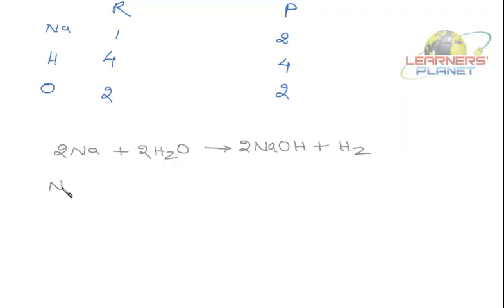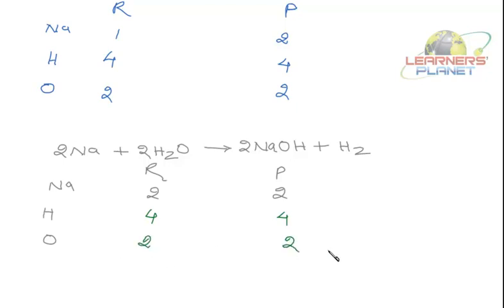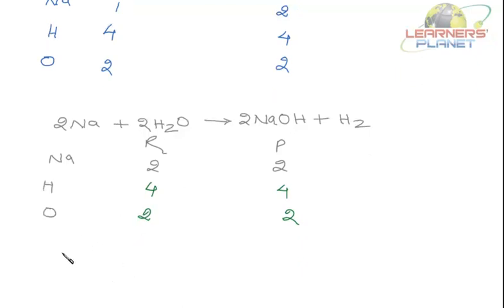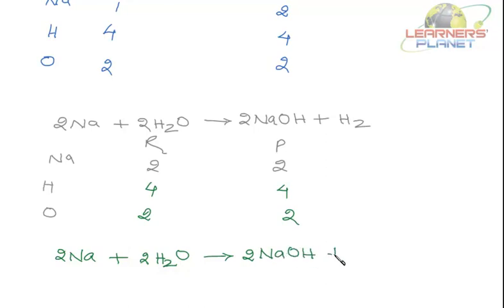Again check out sodium, hydrogen, oxygen — reactant side, product side. Sodium 2, sodium 2. Hydrogen 4, hydrogen 4. Oxygen 2, oxygen 2. So the equation is now balanced. The balanced chemical equation is: 2 atoms of sodium plus 2 molecules of water is giving 2 molecules of sodium hydroxide and 1 molecule of hydrogen.